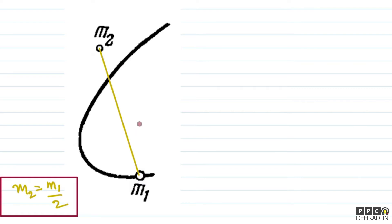We have to understand where the center of mass will be. M1 and M2 are joined by a line, and M1 is heavier, so the center of mass divides the line joining the two masses in the inverse ratio of their masses.